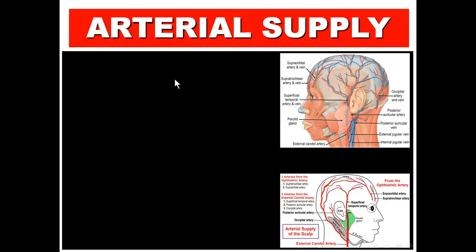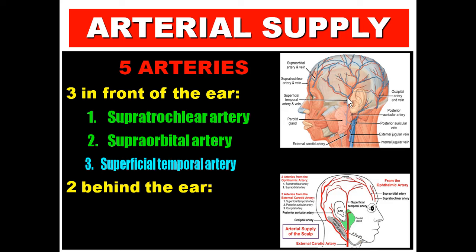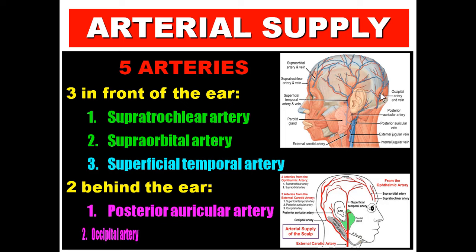Regarding the arterial supply of the scalp: the scalp is supplied by five arteries — three in front of the auricle and two behind the auricle. The three arteries in front of the auricle are: the supratrochlear artery, the supraorbital artery, and the superficial temporal artery. The supratrochlear and supraorbital arteries are branches from the ophthalmic artery, which is a branch from the internal carotid artery. The superficial temporal artery is a branch from the external carotid artery. Behind the auricle, the two arteries are the posterior auricular artery and the occipital artery — both branches from the external carotid artery. The posterior auricular runs above the posterior belly of the digastric; the occipital runs below it.